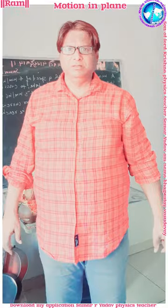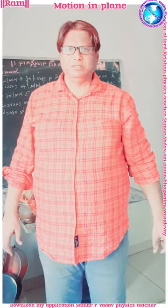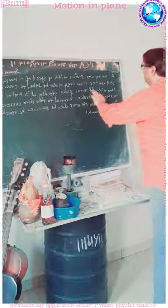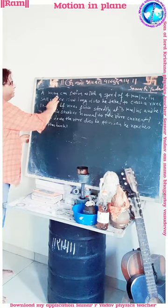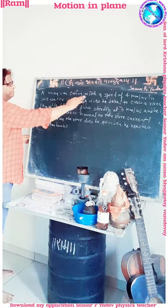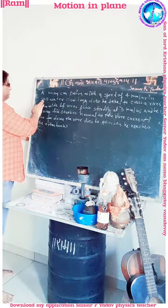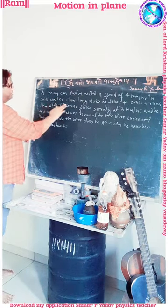Today in physics, motion in a plane. We will solve a numerical. A man can swim with a speed of 4 km per hour in still water.